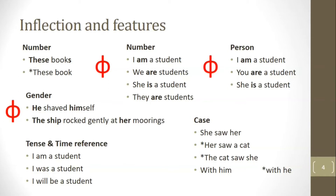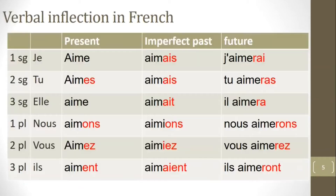Similar effects occur with prepositions: English prepositions assign non-nominative case, so you can say 'with him' but not 'with he.' Inflectional markings in English tend not to be complicated, and English is often referred to as morphologically impoverished. In other languages, which are more well-behaved with respect to inflection, a much more varied range of inflections may occur.